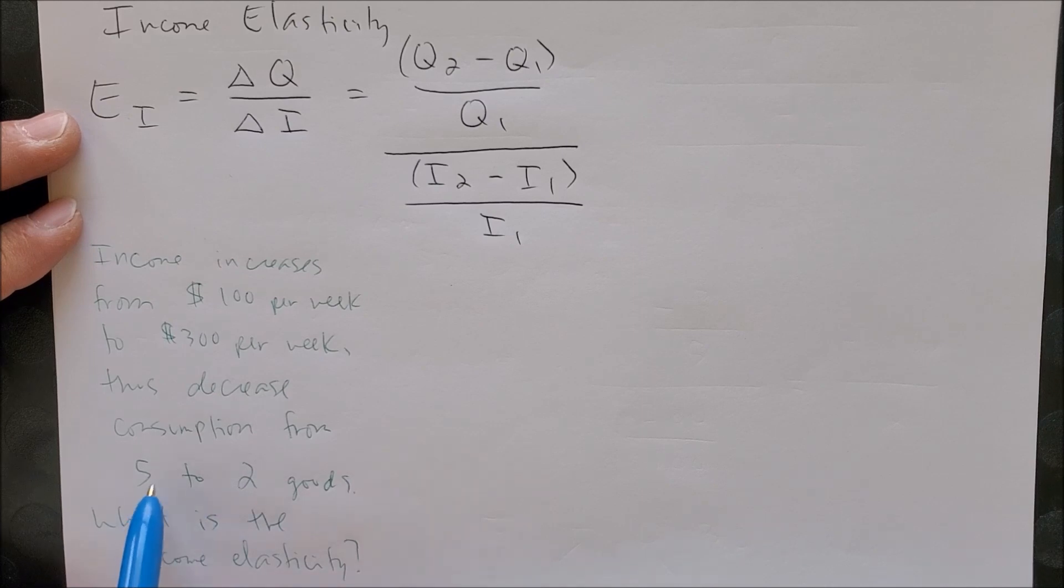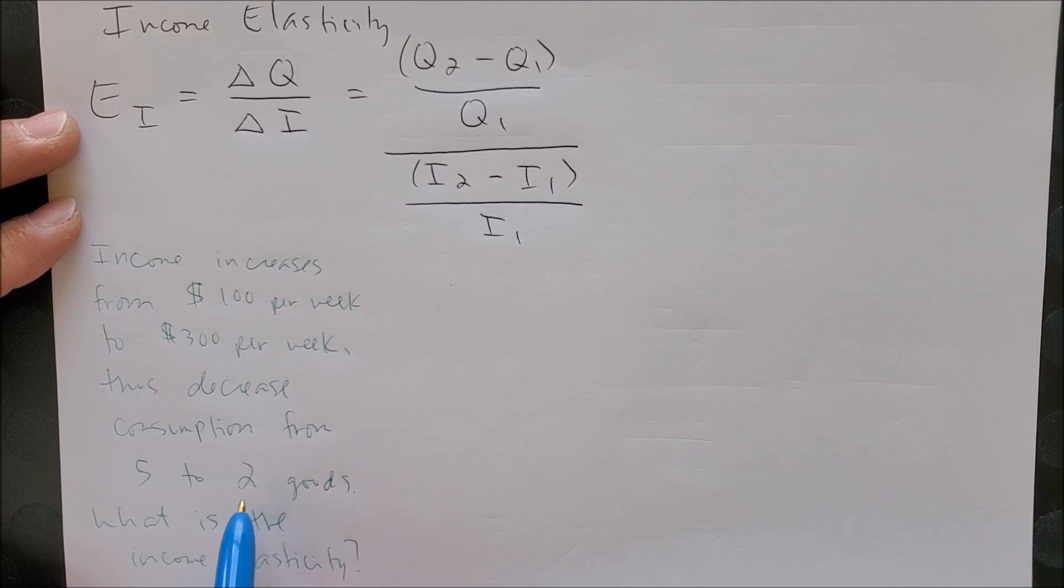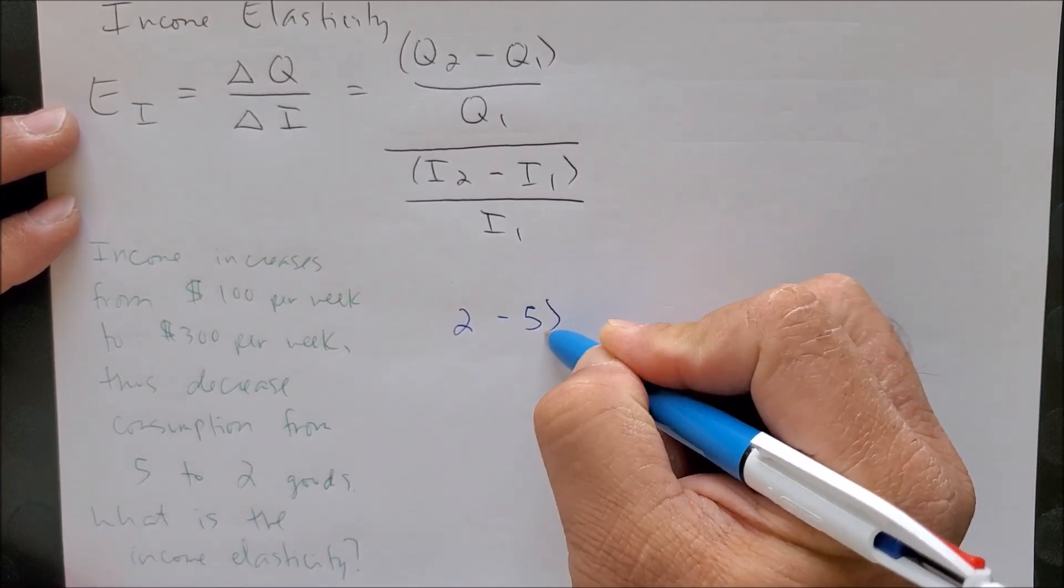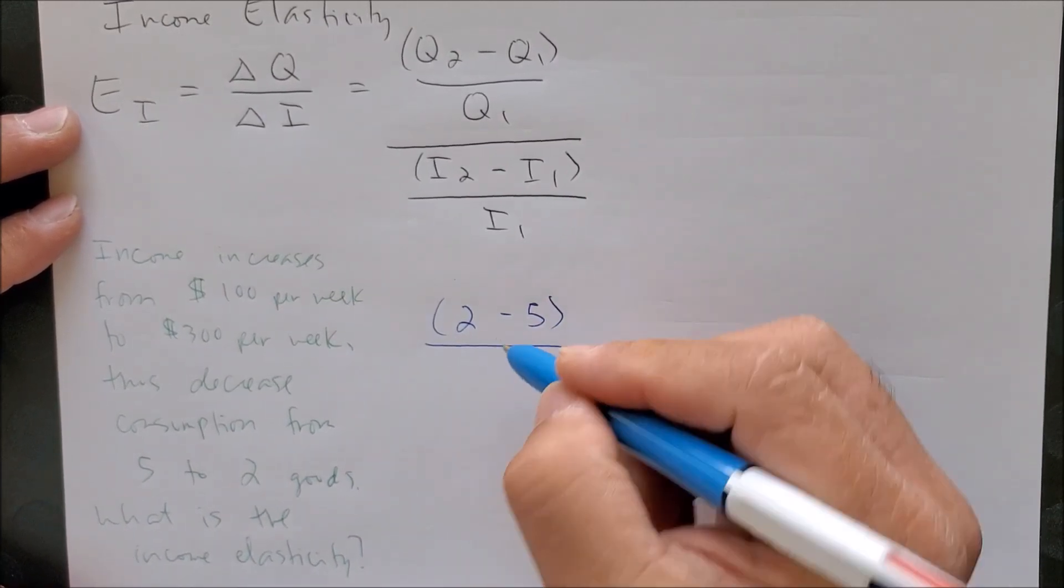At the same time, we can see that we have another set of numbers which represents the quantity of goods consumed from 5 to 2. So now we can plug in what we have into our new equation.